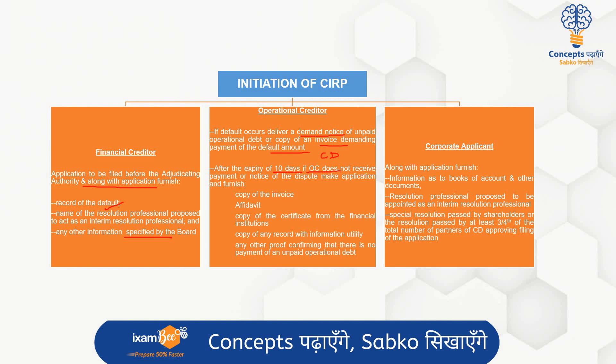If there is no payment received or no notice with respect to dispute, then the operational creditor can go ahead and make an application. Along with the application, he will furnish: a copy of the invoice, the demand with respect to payment, a copy of the certificate from the financial institutions confirming there has been no payment of the unpaid operational debt, a copy of the record with the information utility confirming no payment of the unpaid operational debt, or any other proof confirming this particular fact.